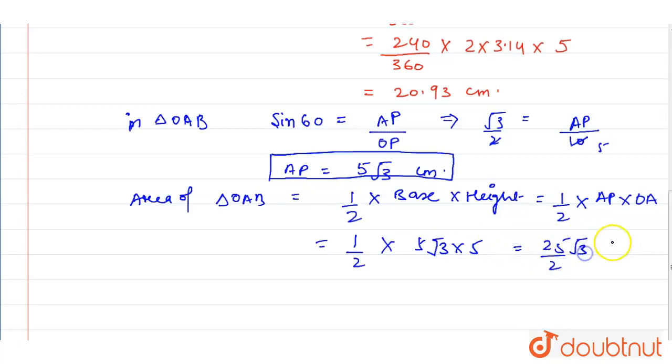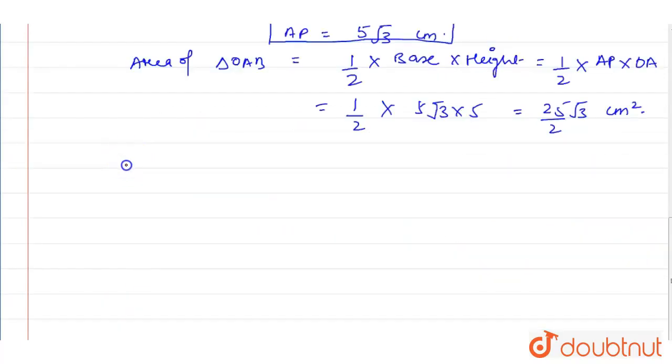So this will be 25 divided by 2 of root 3 centimeter square. Now we calculate the area of minor sector OACB.